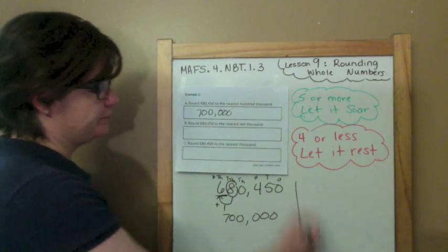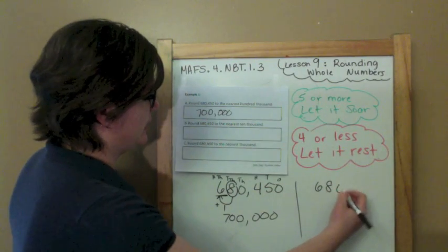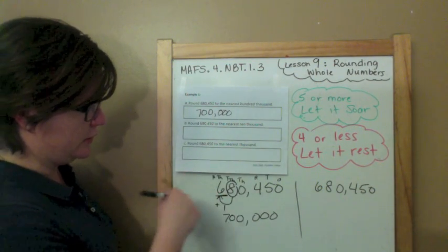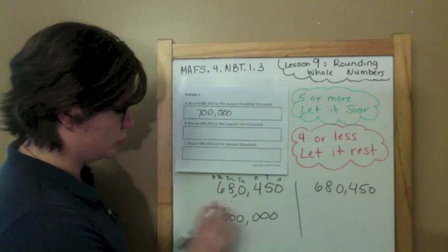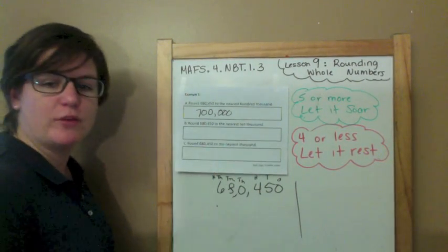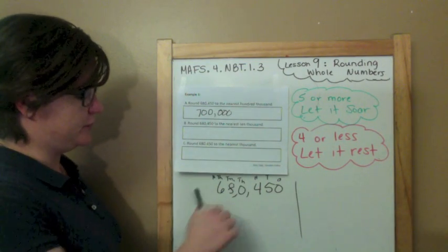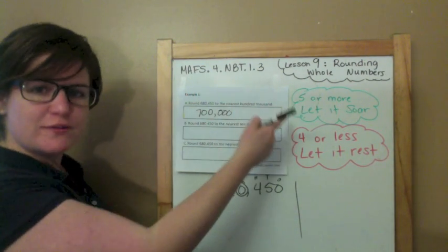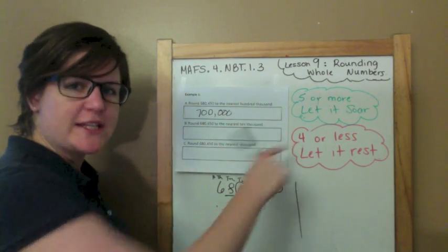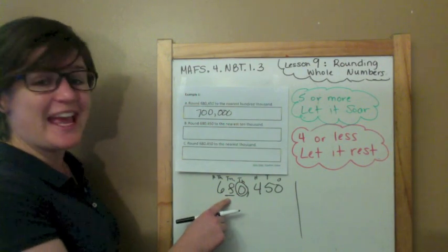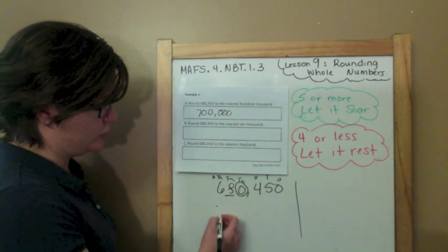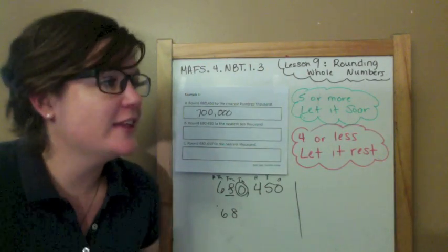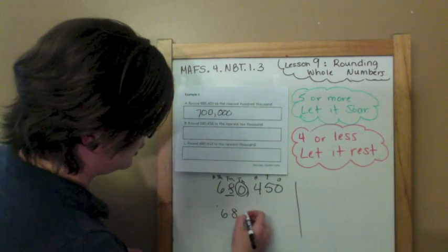Let's go on to part B. Round the same number, 680,450, to the nearest 10,000. The ten-thousands place is right here. When you round, find and underline the place. Spotlight to the right — decide the digit's fate. Zero is four or less, you better let it rest, meaning you let the eight rest. So the six drops down, the eight drops down, and everything else becomes zeros.